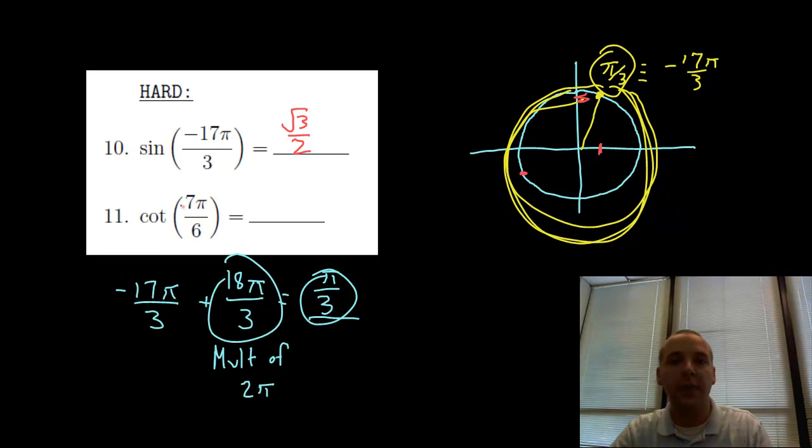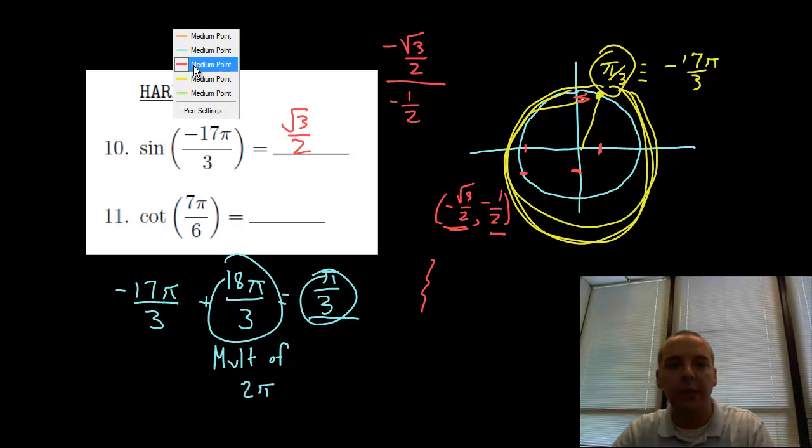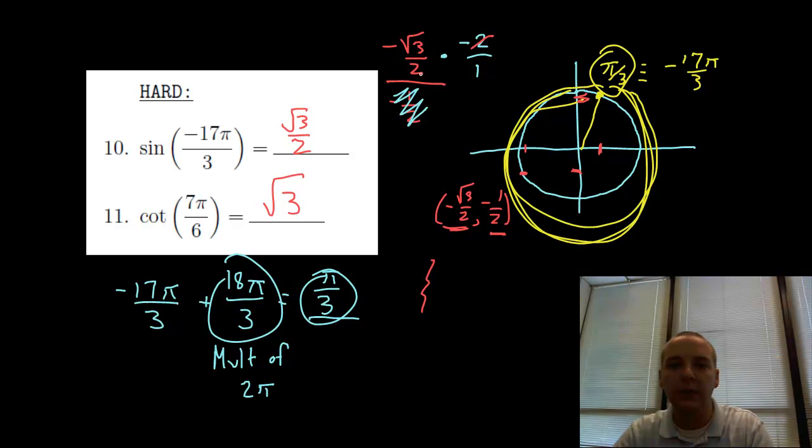Number 11, cotangent of 7pi over 6. That would be the reciprocal of tangent. All I need to do is find the sine and cosine at this point, 7pi over 6. Looking at it, I see it's negative root 3 over 2, a large negative x value, and negative 1 half, a small negative y value. Instead of sine over cosine like we do for tangent, I'll take the reciprocal and do cosine over sine for cotangent. We'll have negative root 3 over 2 divided by negative 1 half. The common algebra trick is instead of dividing by another fraction, you can multiply by the reciprocal, 2 over 1. We simplify that and get root 3, because the 2's cancel and the negatives cancel each other out.